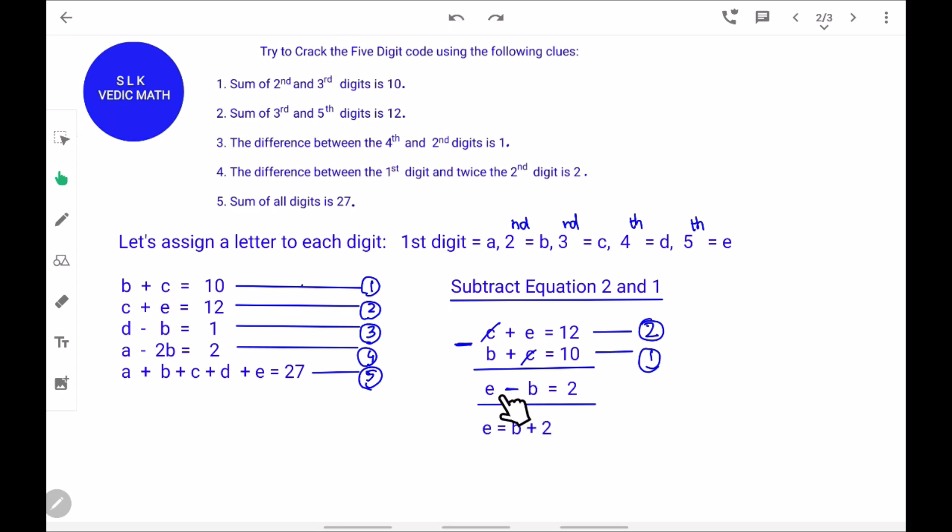When this minus B goes to the other side, it becomes plus B. So, E equal to B plus 2.